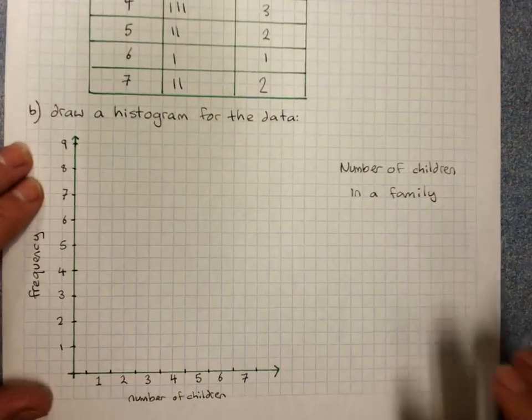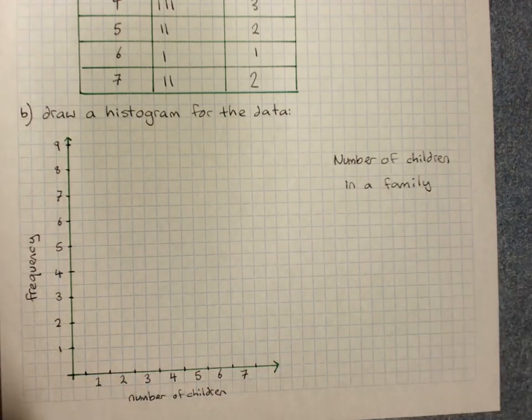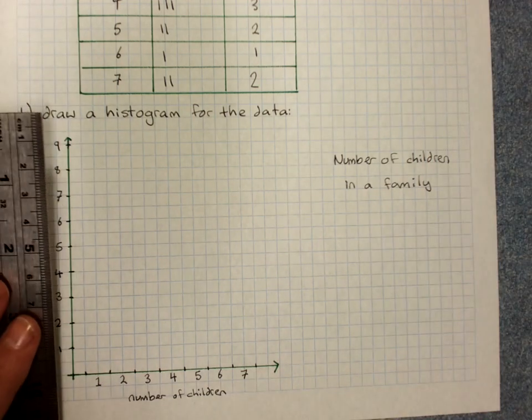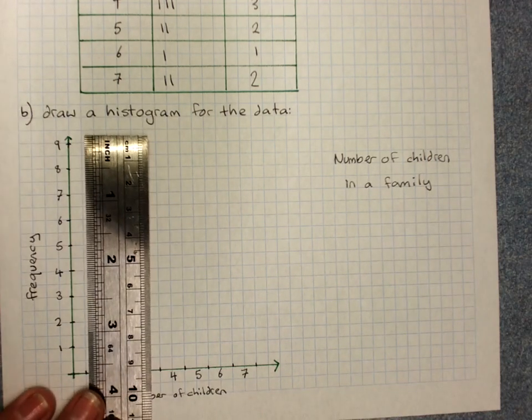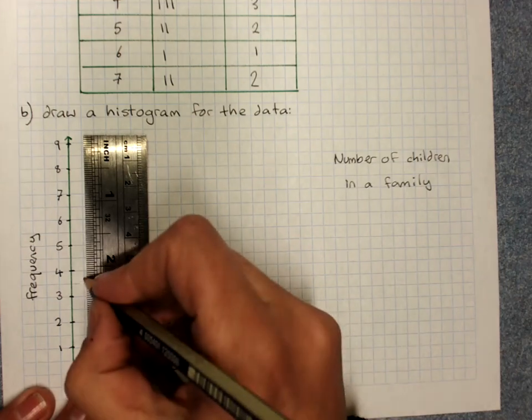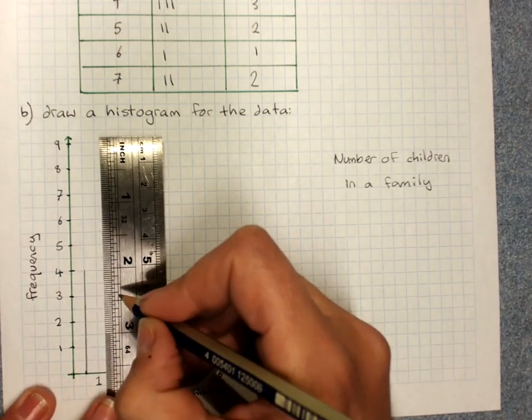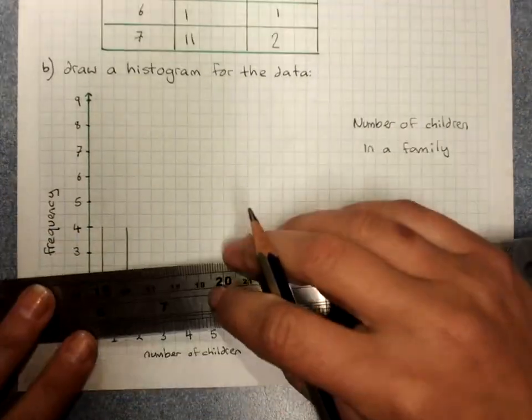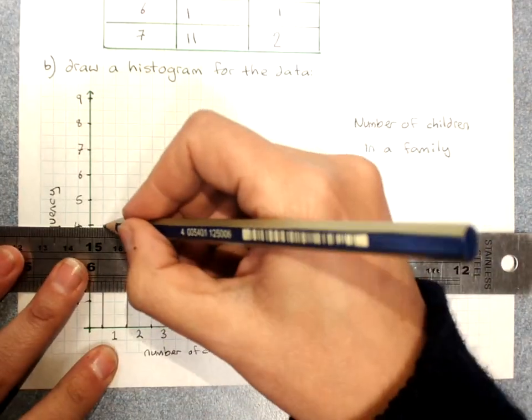Or in families. So with a pencil, in case you make a mistake with the columns. There were 4 people with only 1 child in the family. So neatly making my column. And, sorry about moving my paper there. The top.